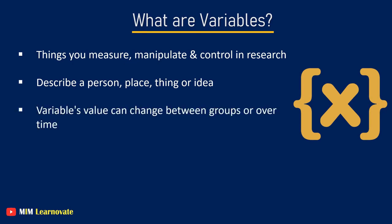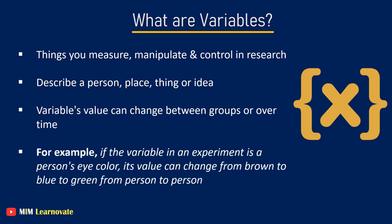A variable's value can change between groups or over time. For example, if the variable in an experiment is a person's eye color, its value can change from brown to blue to green from person to person.